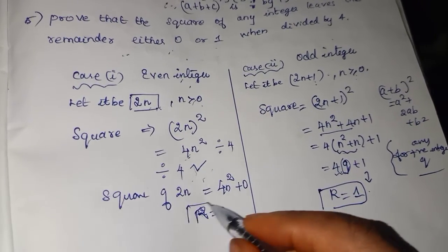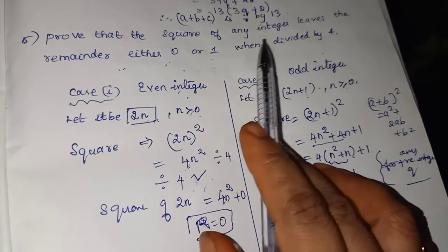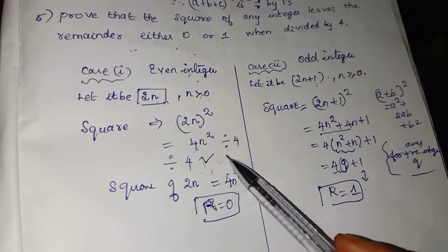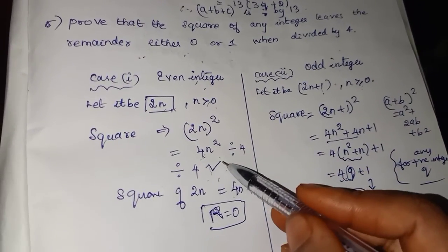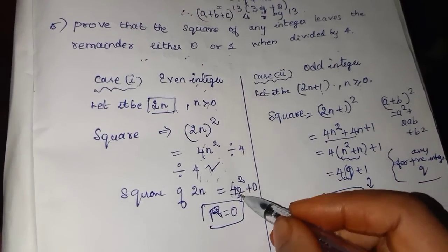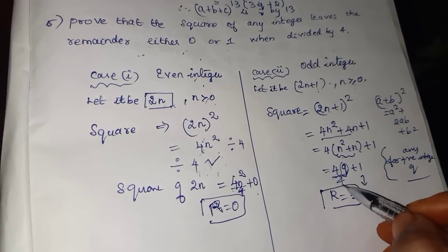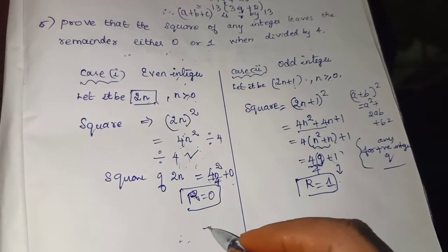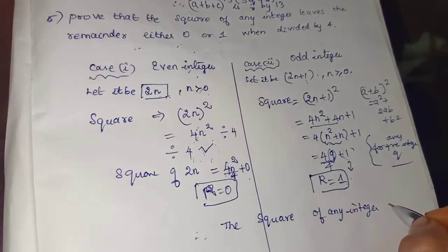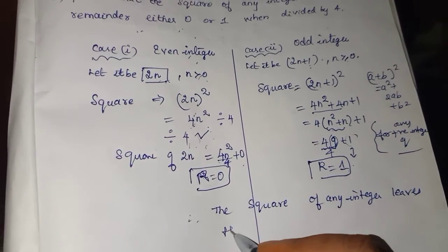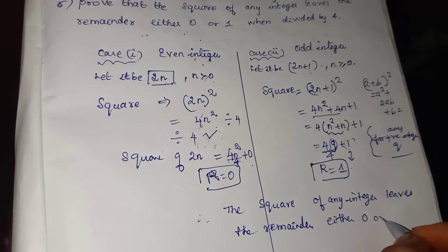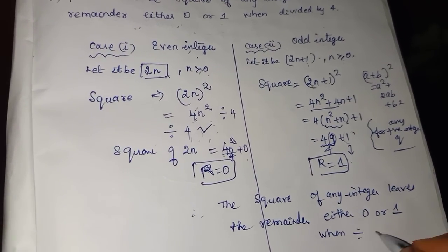So when dividing by 4, the square of an even integer gives remainder 0, and the square of an odd integer gives remainder 1. Therefore, the square of any integer leaves the remainder either 0 or 1 when divided by 4. Proved.